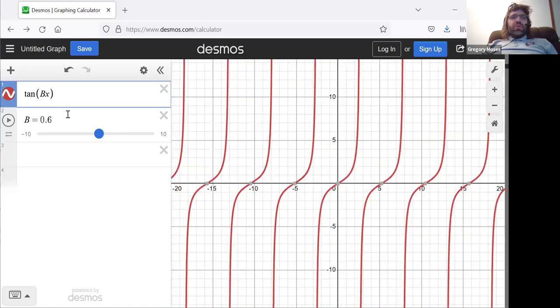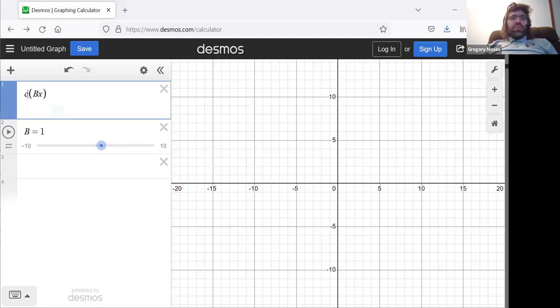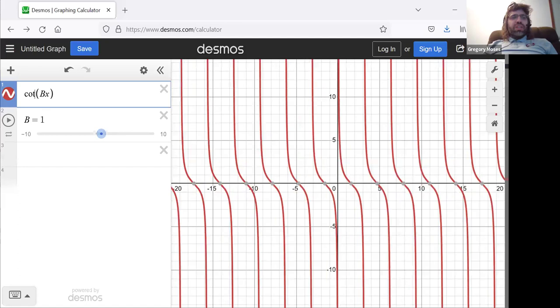So, again, we can probably imagine what it will do to the cotangent. Exactly the same thing.